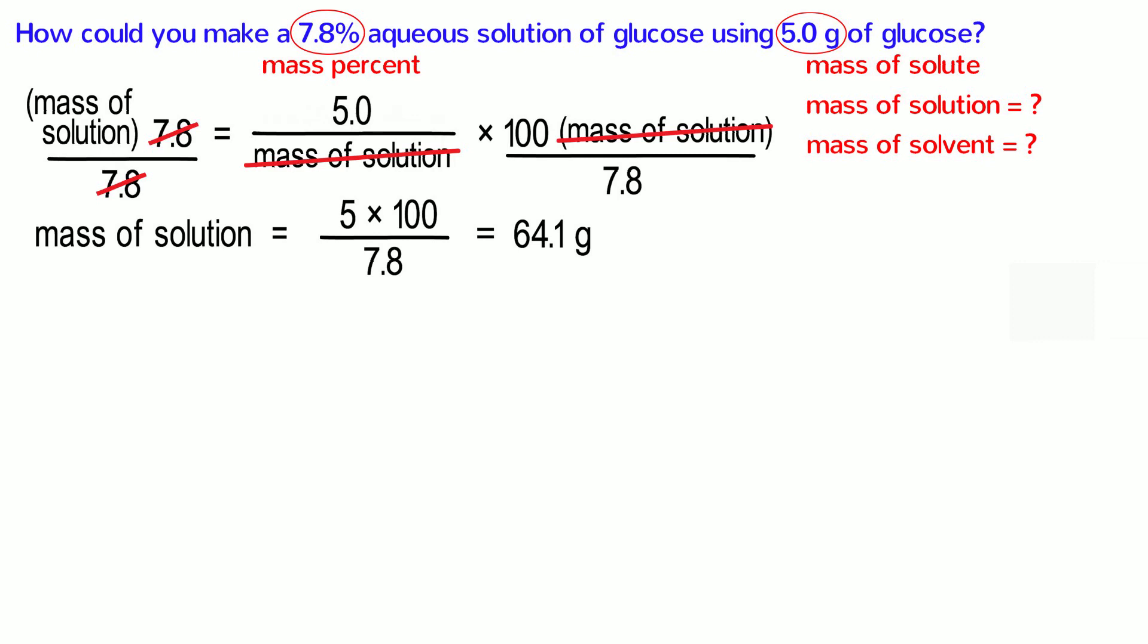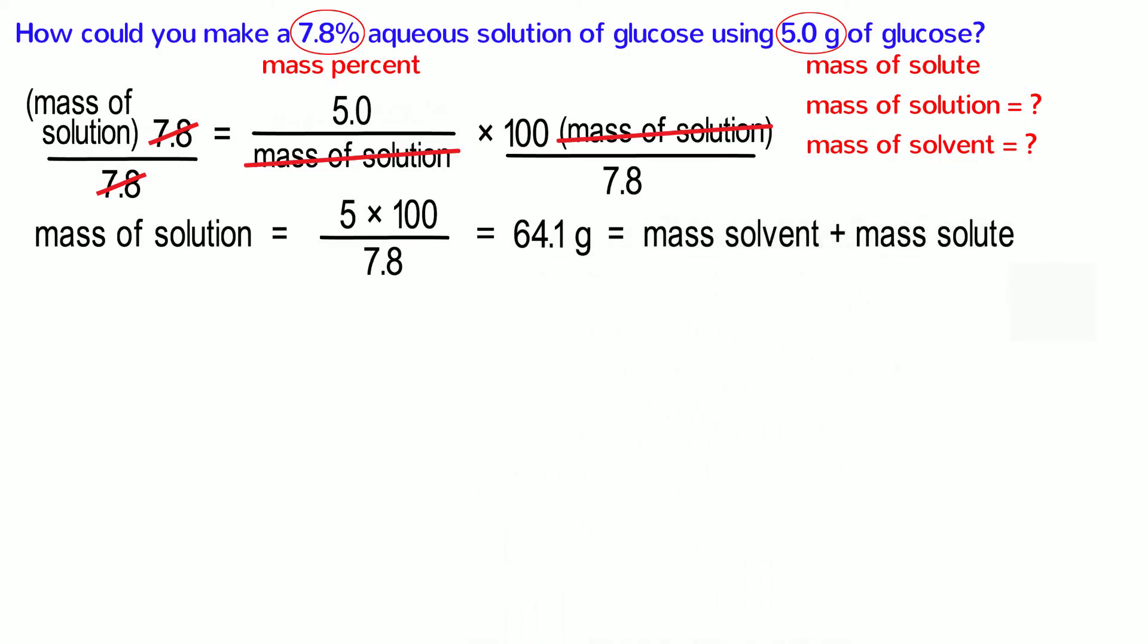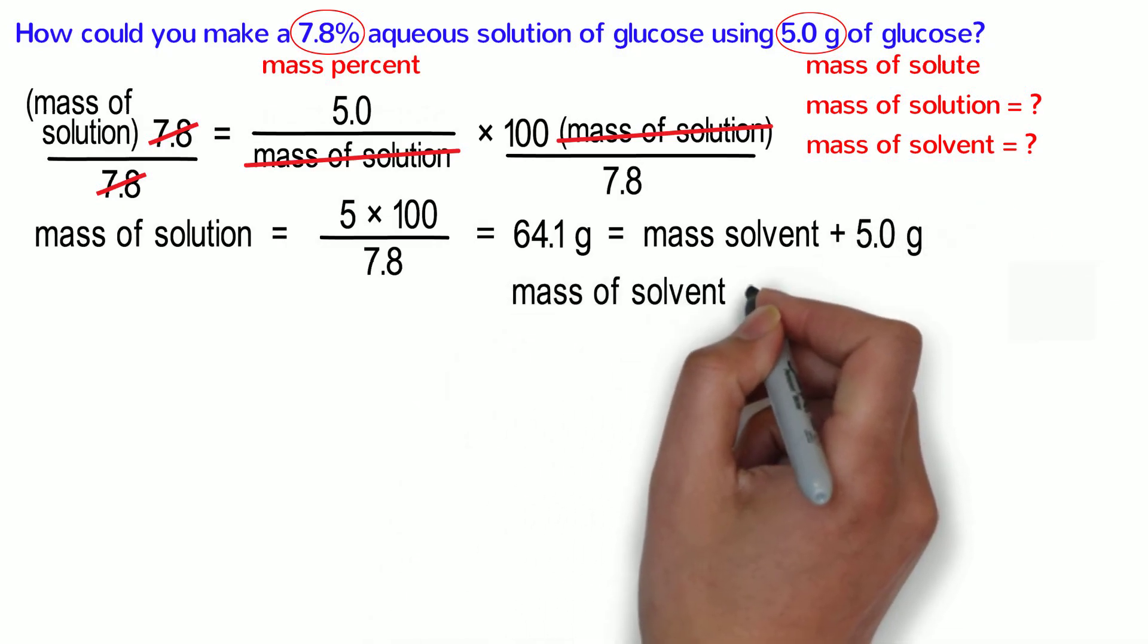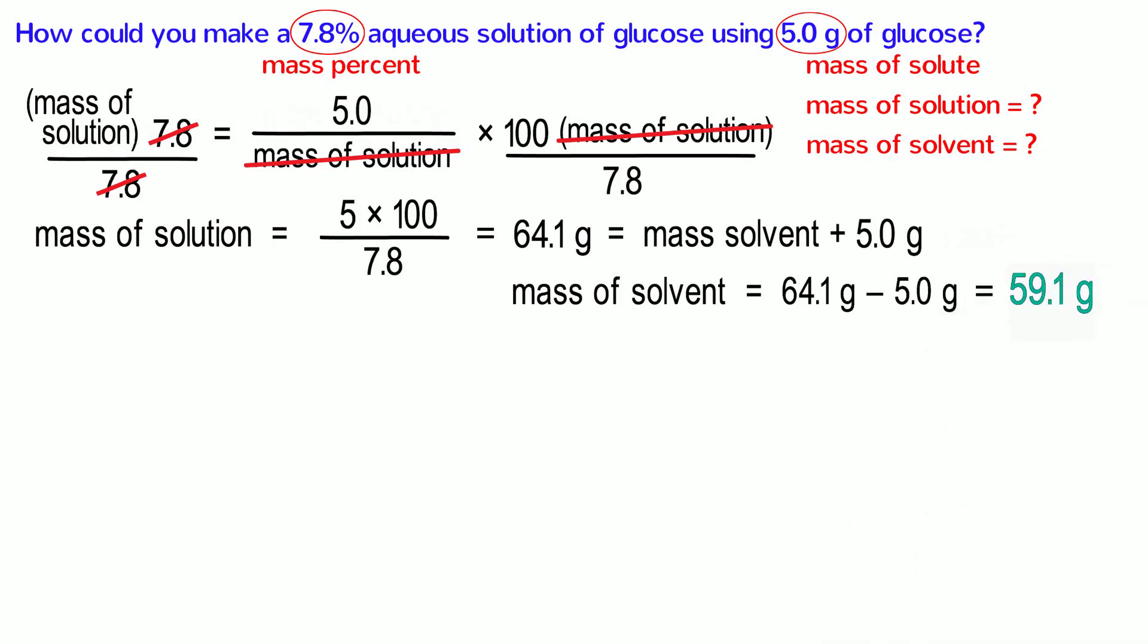Because the units for the mass of glucose are grams, the units for the mass of the solution are also grams. We're almost done, but as we mentioned earlier, it is easier in the lab to weigh the solvent separately, so we need to calculate the mass of the solvent all by itself. The mass of the solution equals the mass of the solvent plus the mass of the solute, and we know that the mass of the solute is 5 grams. In other words, the mass of the solvent is 64.1 minus 5, or 59.1 grams.